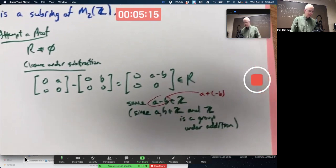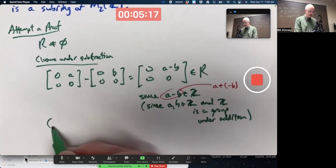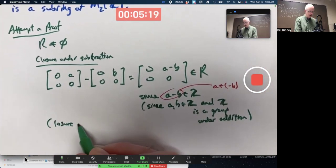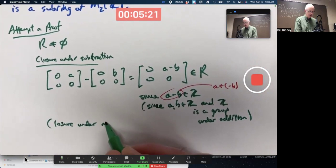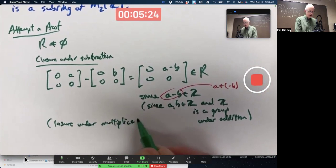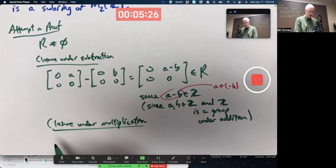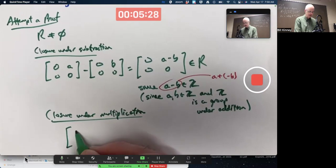Closure under multiplication happens as well. This will be a subring. Closure under multiplication. Once again, you want to use a different letter in the upper right corner of the second matrix than the first matrix.